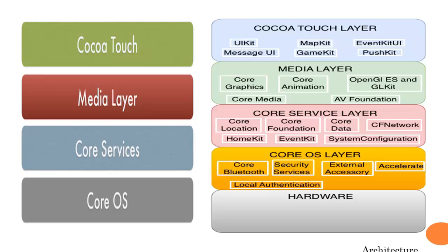The layer above the CoreOS layer is called the CoreServices layer. It provides various services like CoreLocation, CoreFoundation, CoreData, CFNetwork, HomeKit, EventKit, and System Configuration.